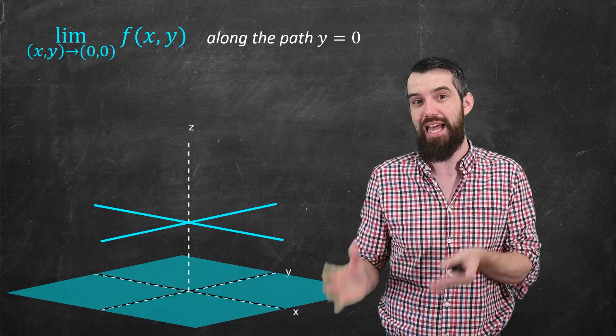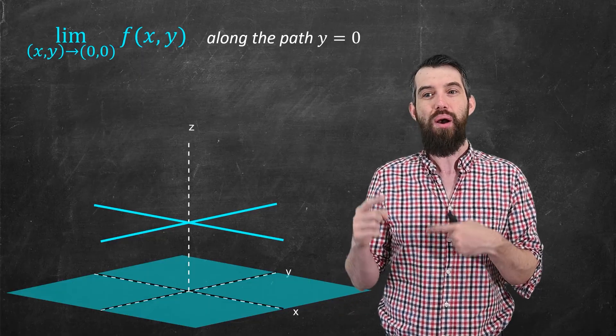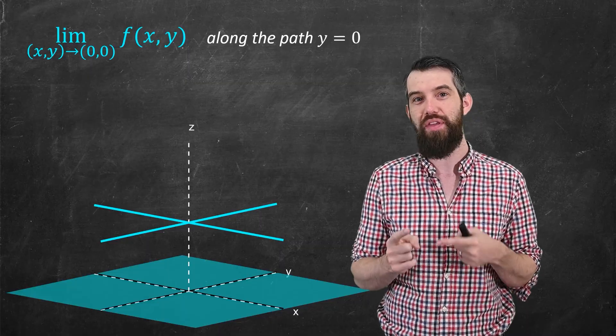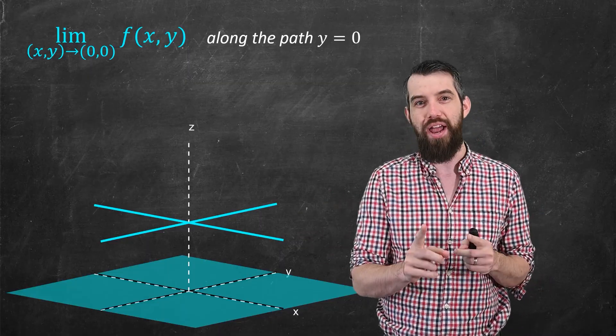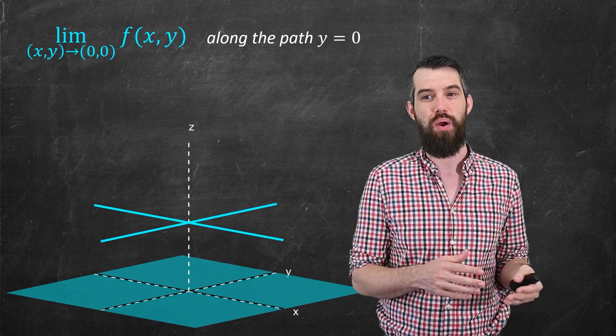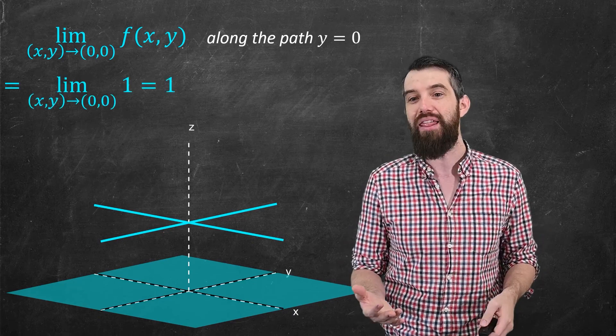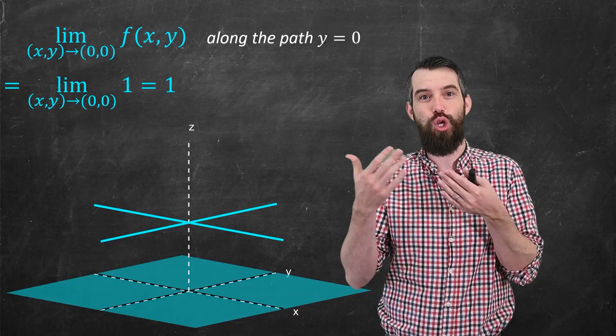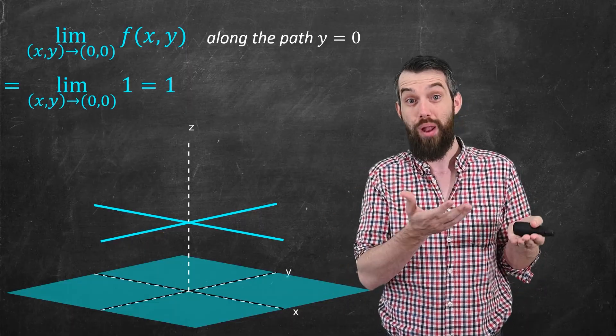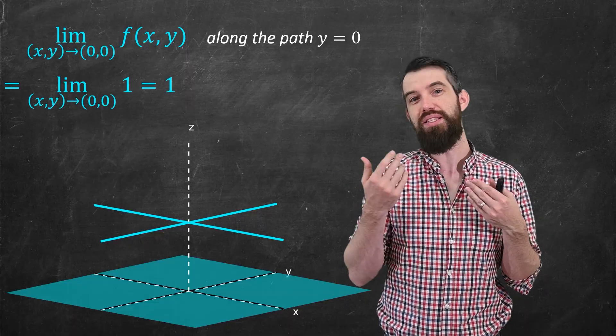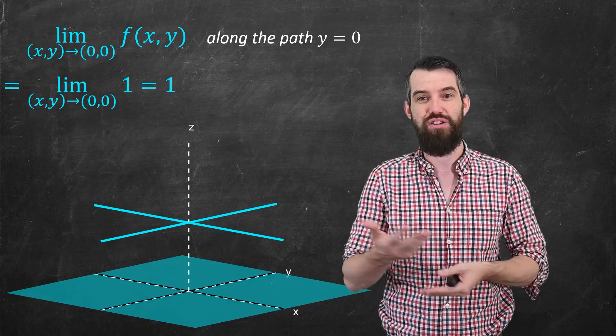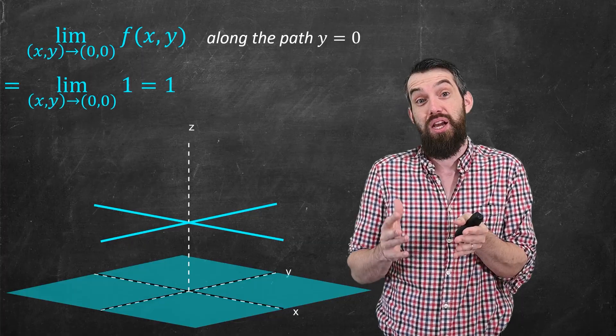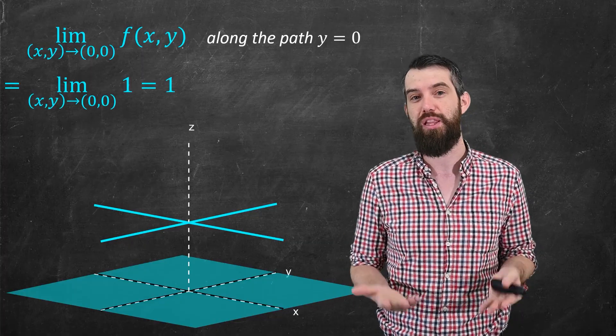In other words, this is just the x-axis. Now, along this path, if you're going along the x-axis, well, that function is 1 everywhere where y is 0. So according to this path, this is just taking the limit of the function 1, and of course the limit of the function 1 is just 1. So the point is that this path does not see anywhere where the function is 0. It only sees where the function is 1, and so it appears like the limit is 1.